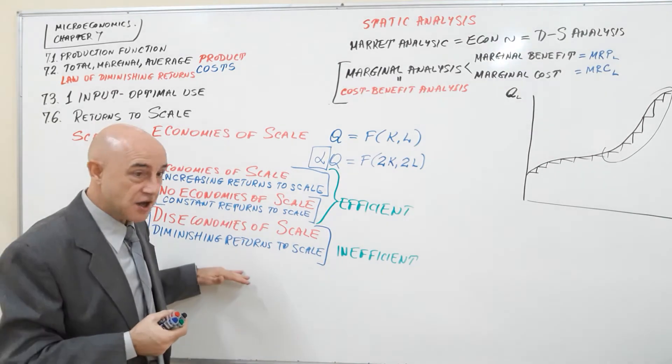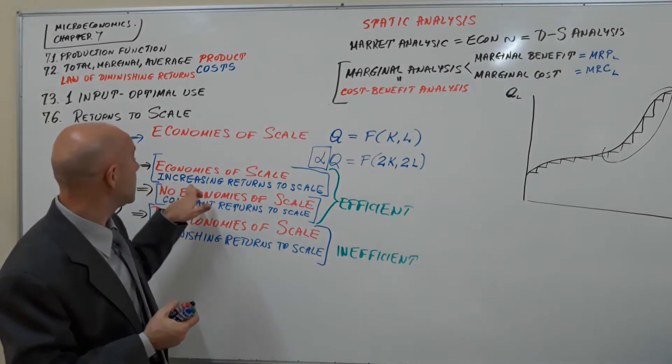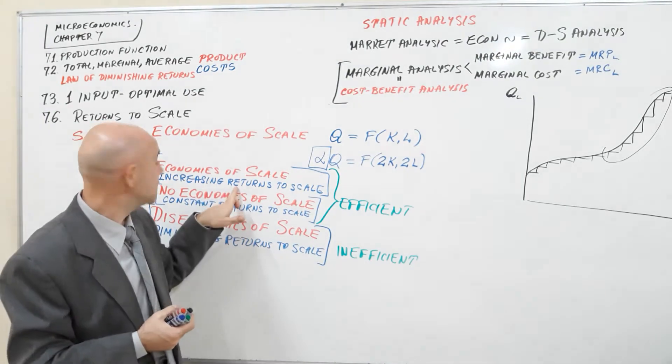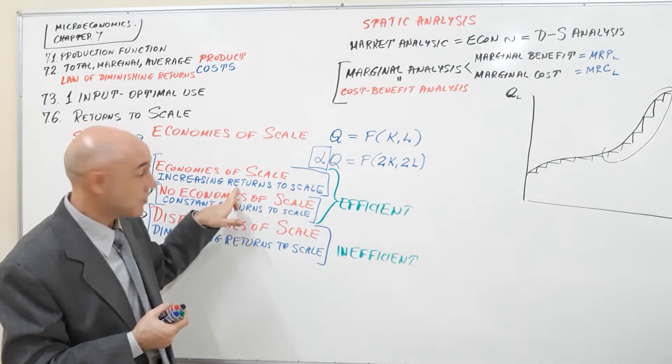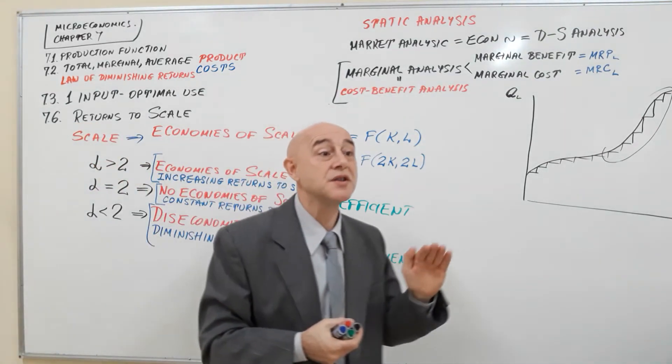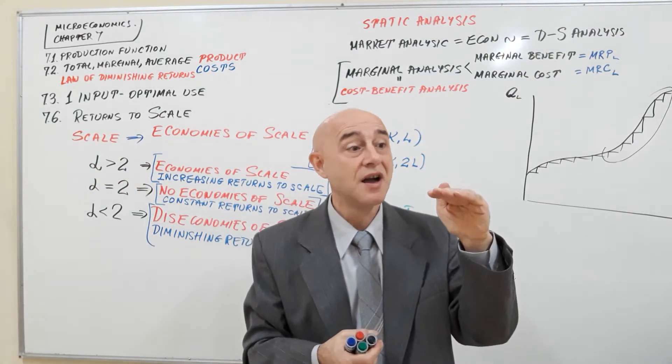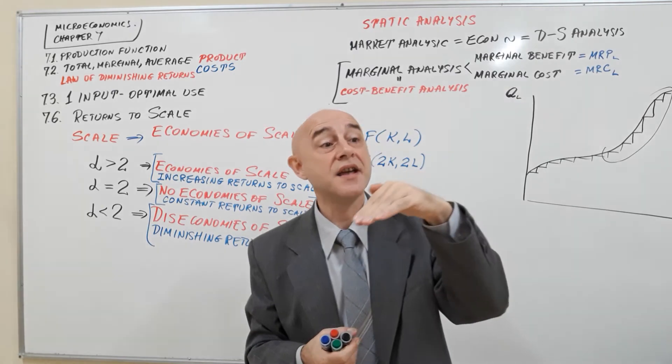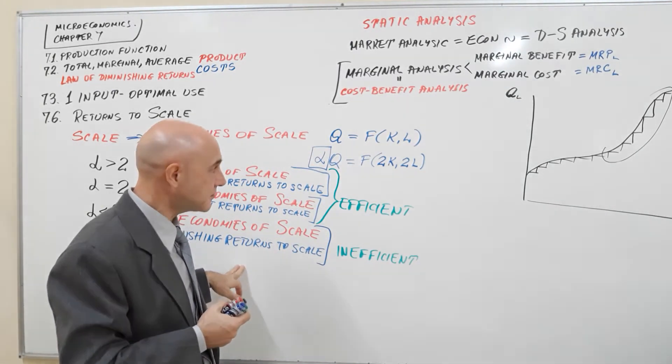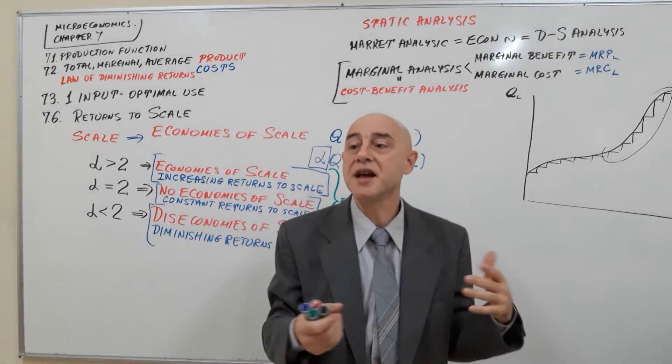So at first, economies of scale are always increasing or rising or positive, rising returns to scale. Then at one point the returns to scale become constant, and then they turn negative. So this refers to the scale of operation.